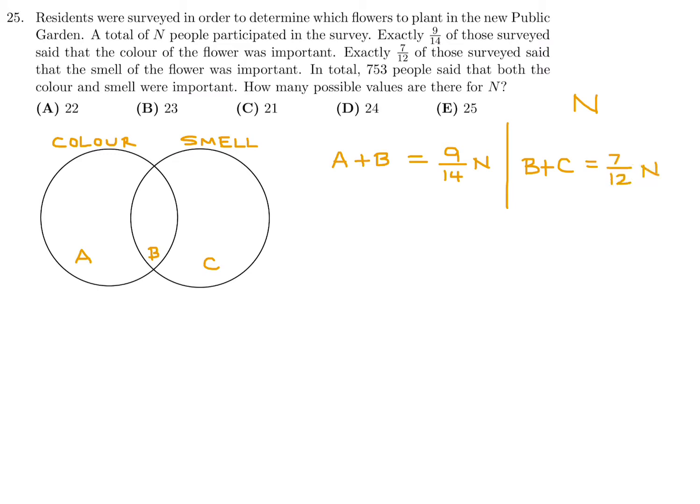Now, one thing you'll notice is that these are all integers, right? A, B, and C represent the number of people. So they have to be integers. So the only way they can be integers is if n is a multiple of 12 and a multiple of 14. So 12 and 14 is what n has to be a multiple of, both of those. So we have to find the least common multiple of 12 and 14.